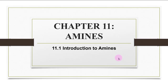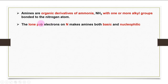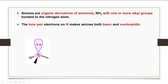Hi everyone, welcome to the video on chapter 11, amines. Amines are organic derivatives of ammonia, NH3, with one or more alkyl groups bonded to the nitrogen atom. The lone-pair electrons on nitrogen makes amines both basic and nucleophilic. The general structure of an amine has three bonds if the nitrogen is neutral, plus one lone pair completing nitrogen's octet.